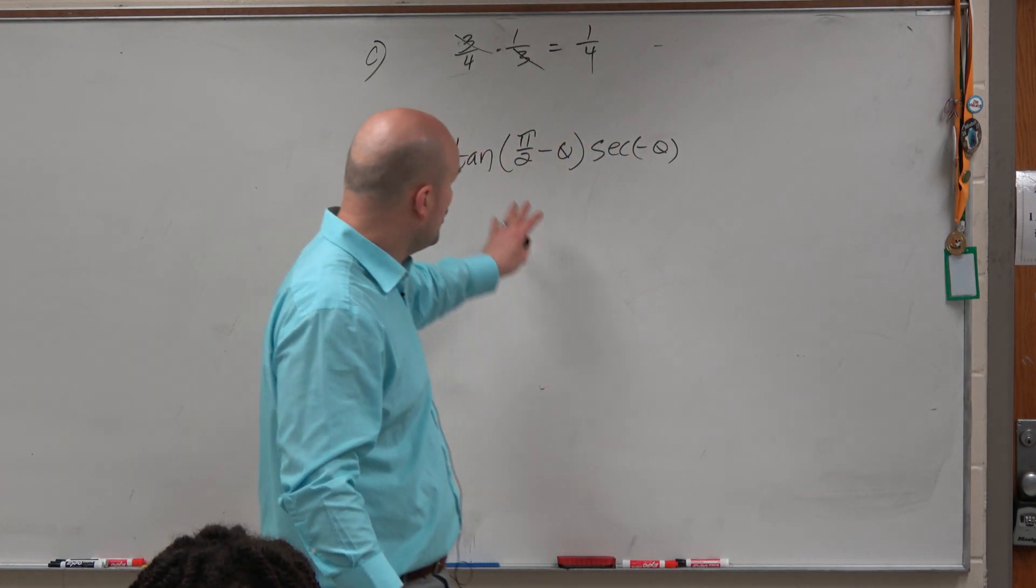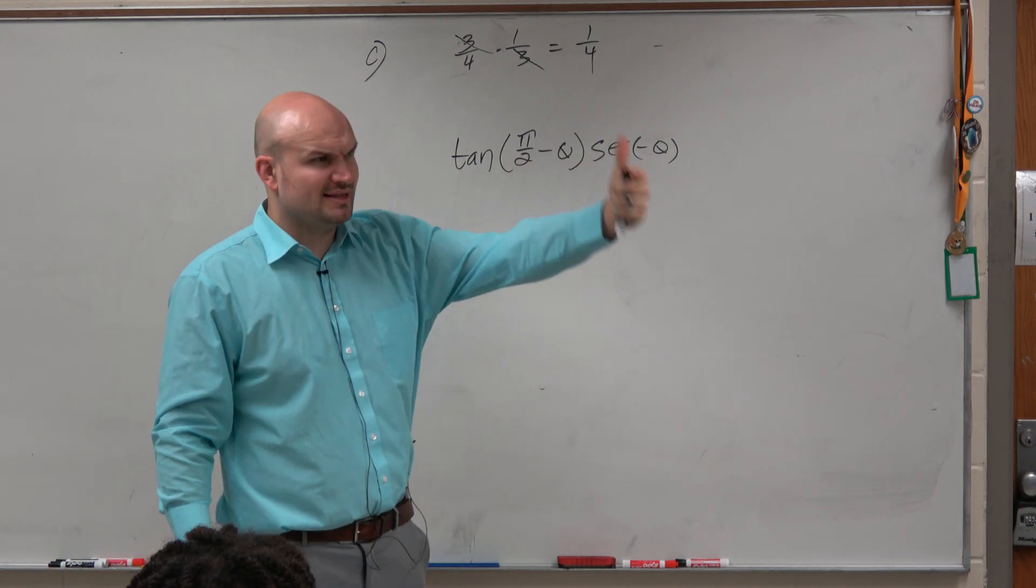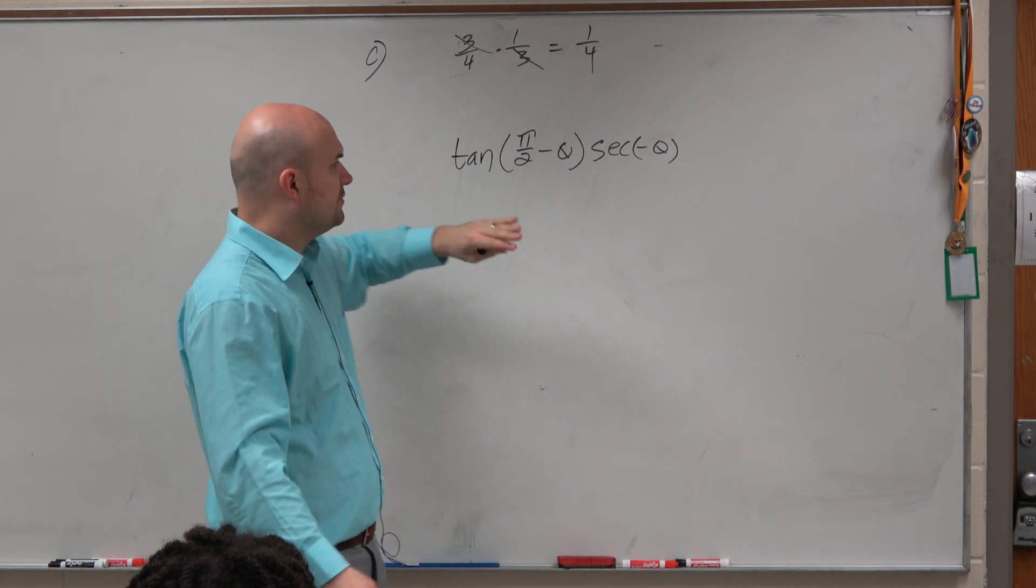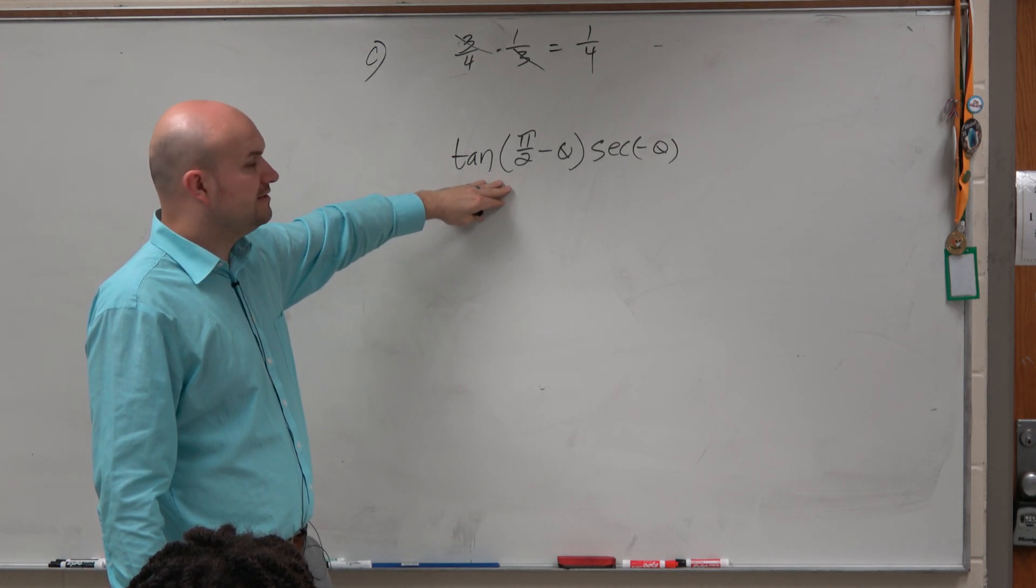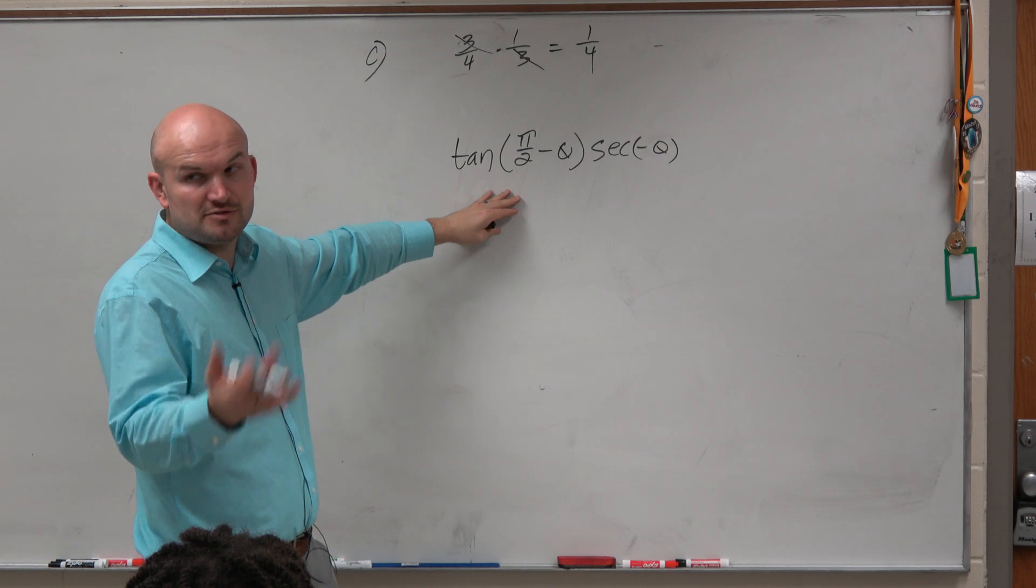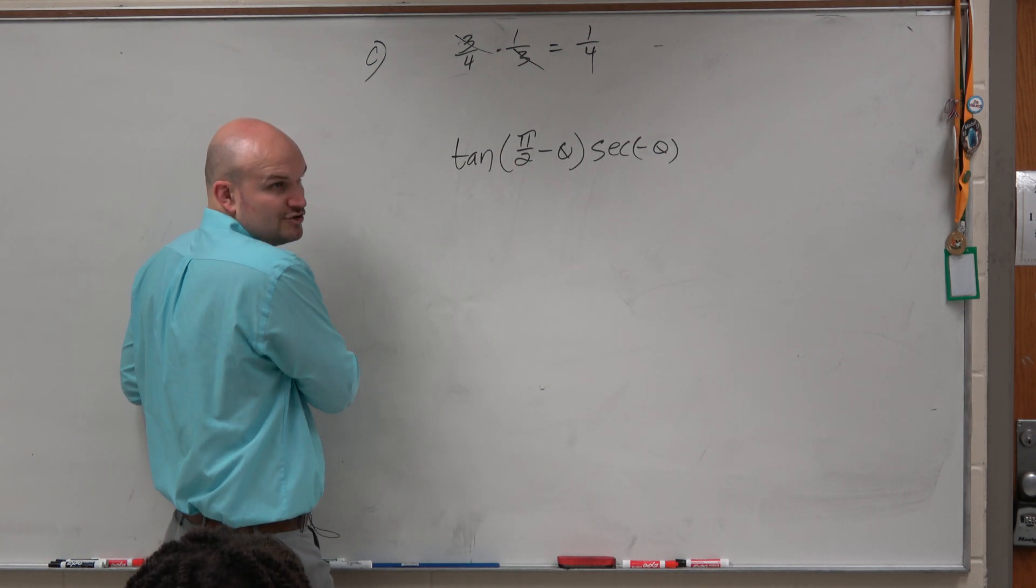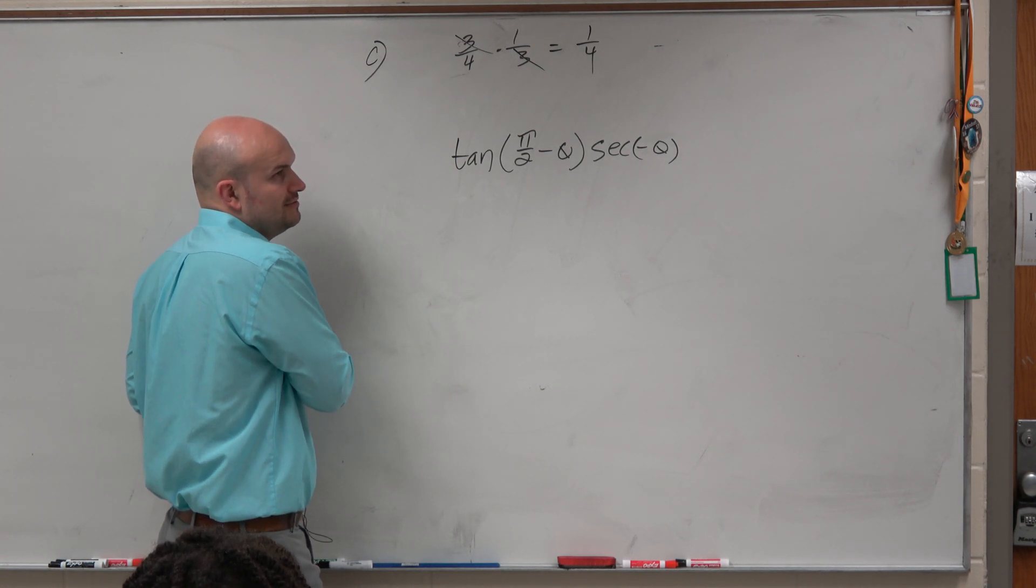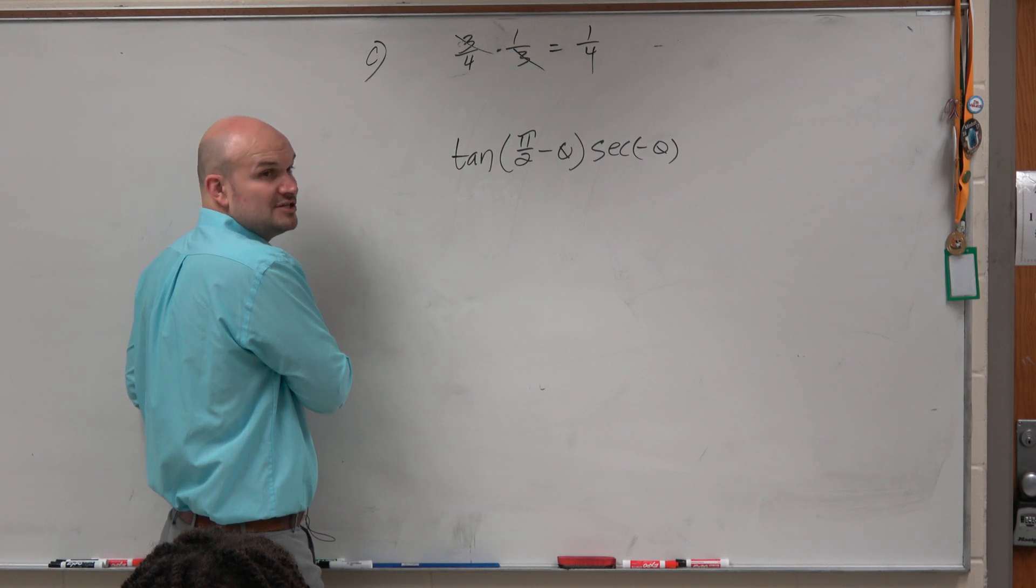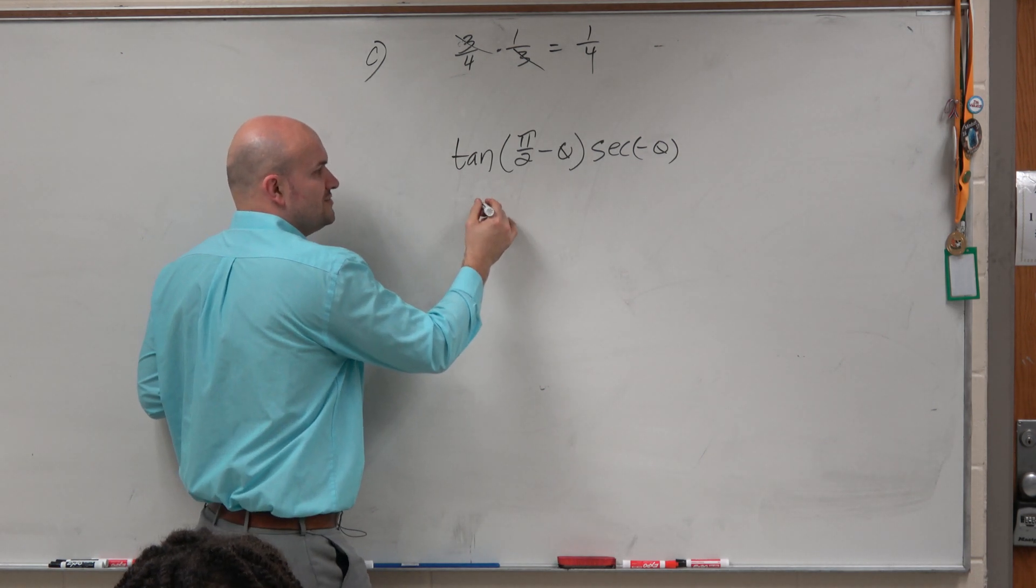Typically, when you guys see that the co-function identities and the even and odd, let's go ahead and rewrite these as their other function. So the way that I memorize the co-function identities is I just think about the graphs that are the same with transformations. So think of pi halves minus theta as transformations. And if you were to apply transformations to tangent, you would only get the cotangent graph. You're not going to get sine. You're not going to get cosecant. You would just get cotangent.